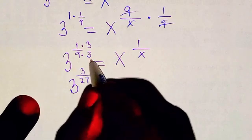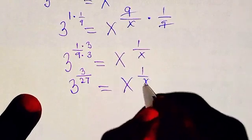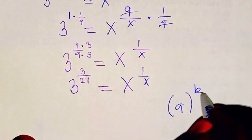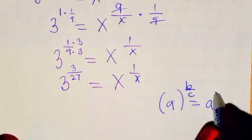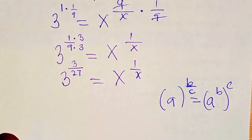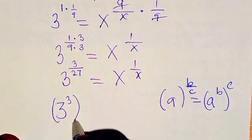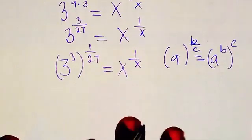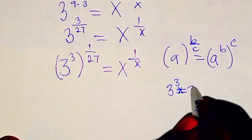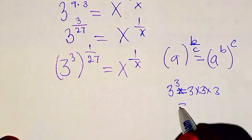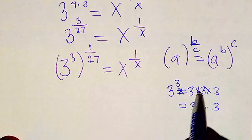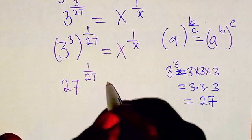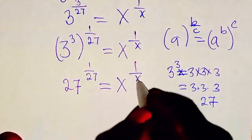If you multiply both numerator and denominator by 3, we are going to have 3 to the power of 3 in the exponent numerator, and 3 times 9 equals 27 in the denominator. So we get 3 to the power 3 over 27. Recall that a to the power b over c can be written by taking b inside and c outside. Applying this, we get 27 to the power of 1 over 27 equals x to the power of 1 over x.